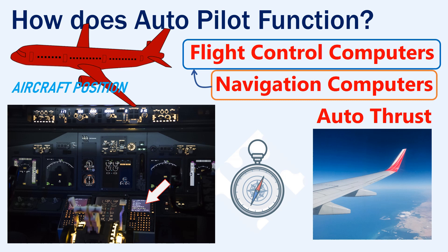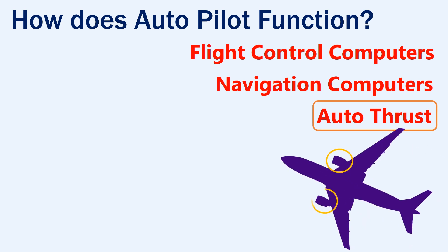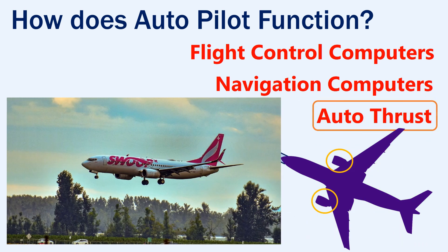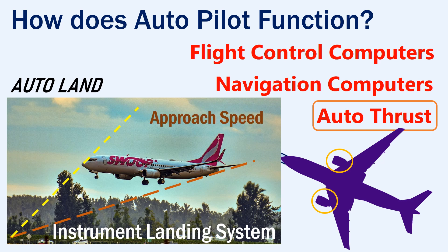The pilots only need to monitor the functioning of the autopilot. The autopilot may also be coupled with the autothrust function, which is used to adjust the engine's thrust for increasing or decreasing the aircraft's speed. This is extremely helpful for performing an autoland with the help of an instrument landing system or ILS. Here, the autopilot will control the aircraft to capture the localizer and the glide slope beams, and the autothrust will adjust the speed to maintain the correct approach speed.